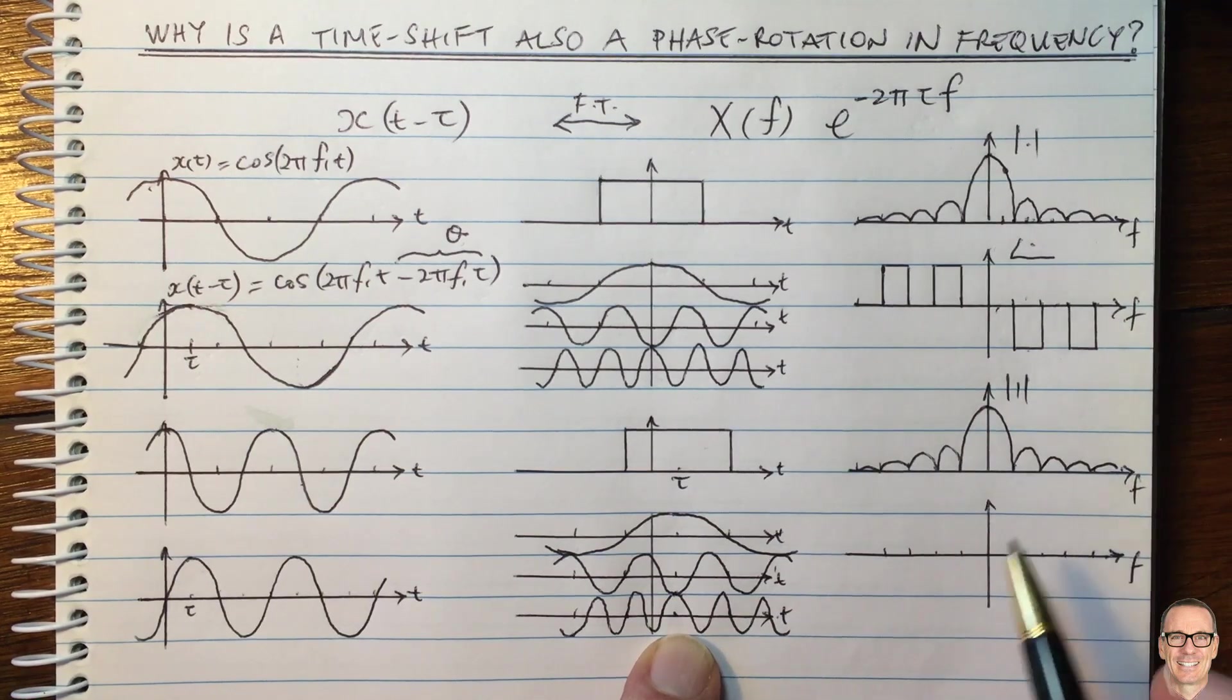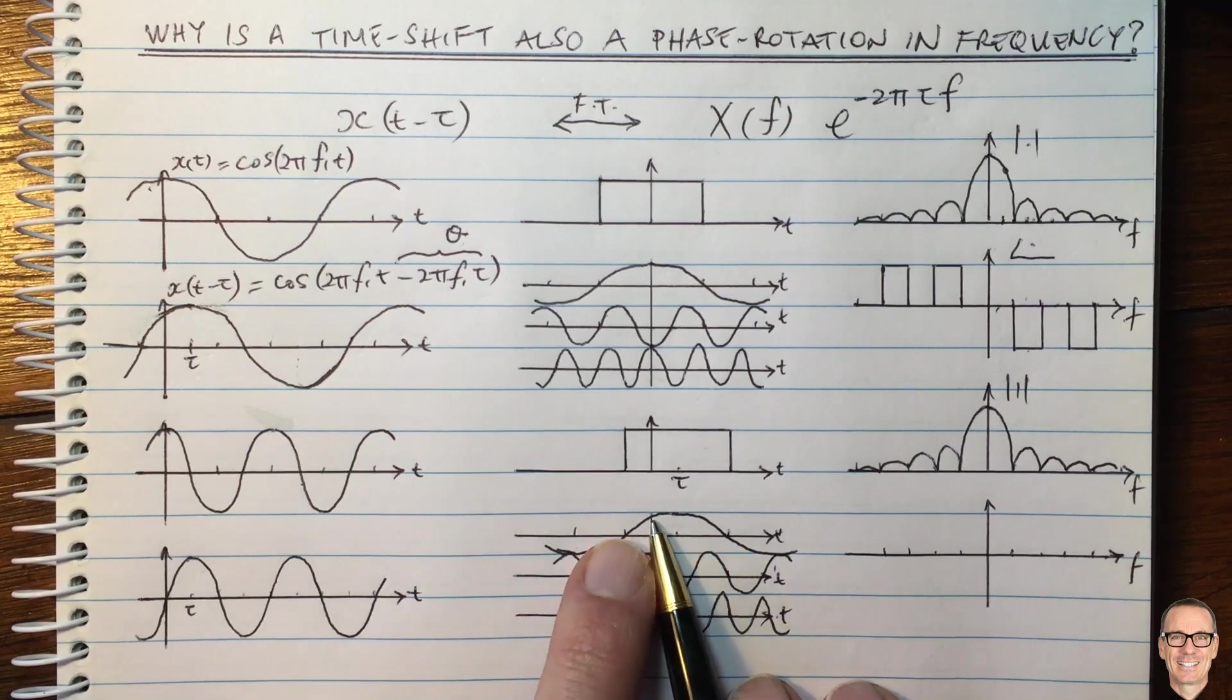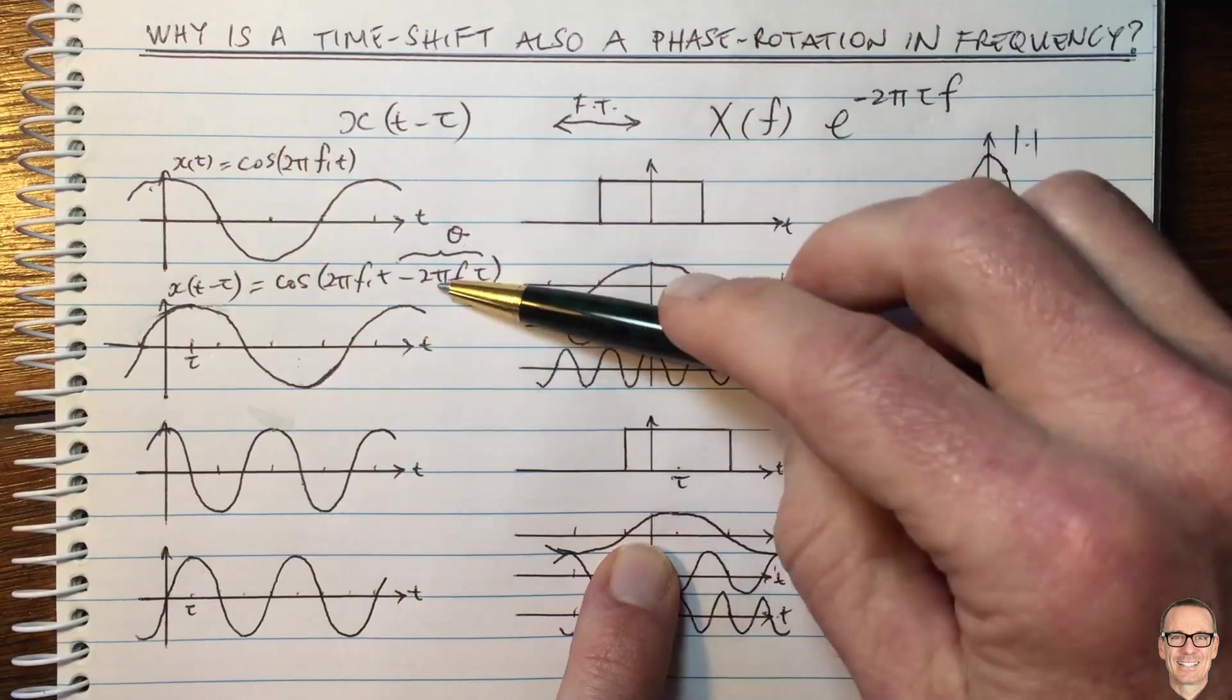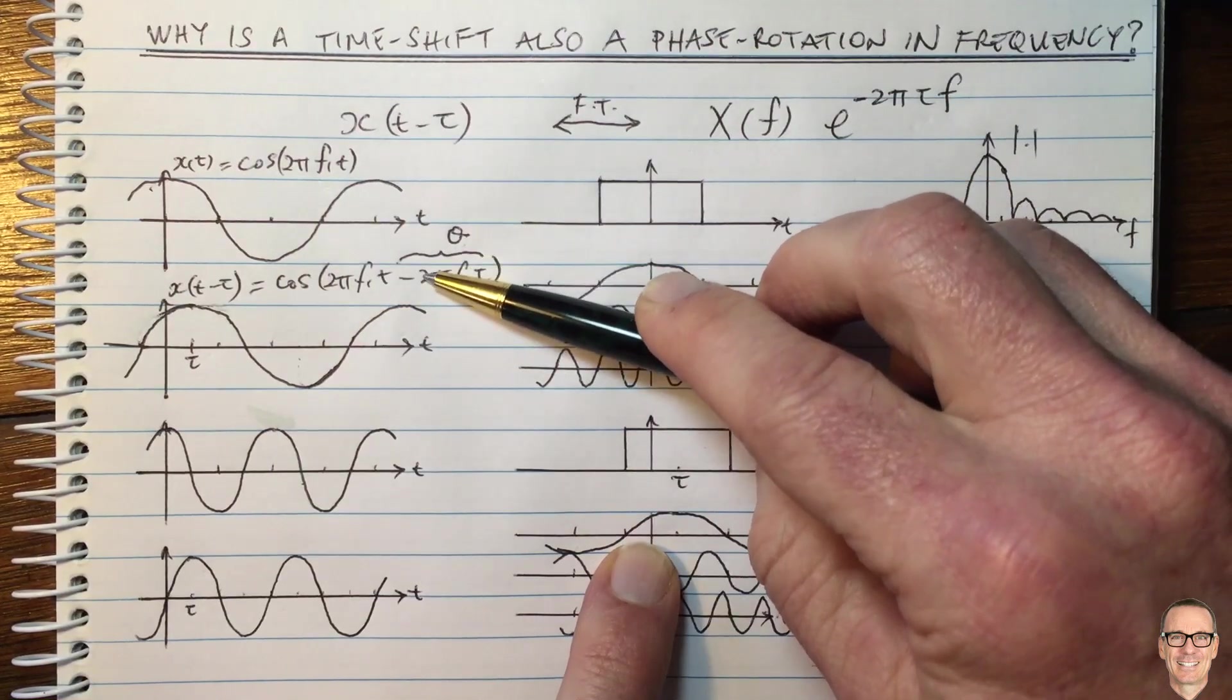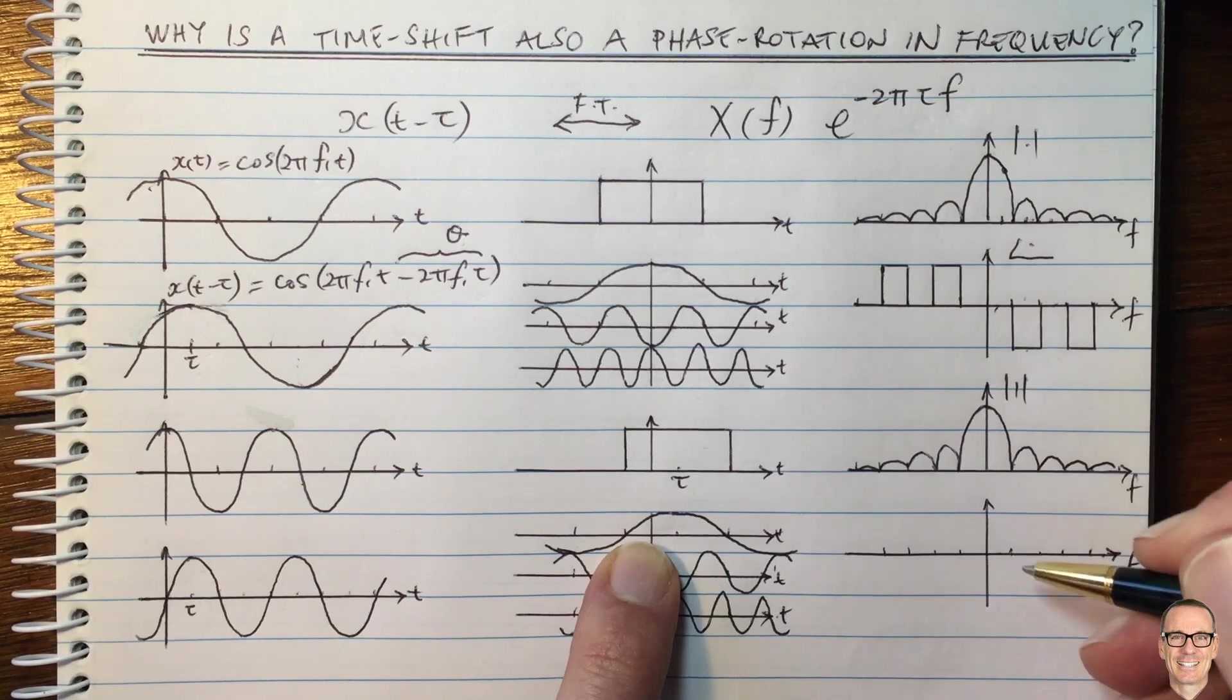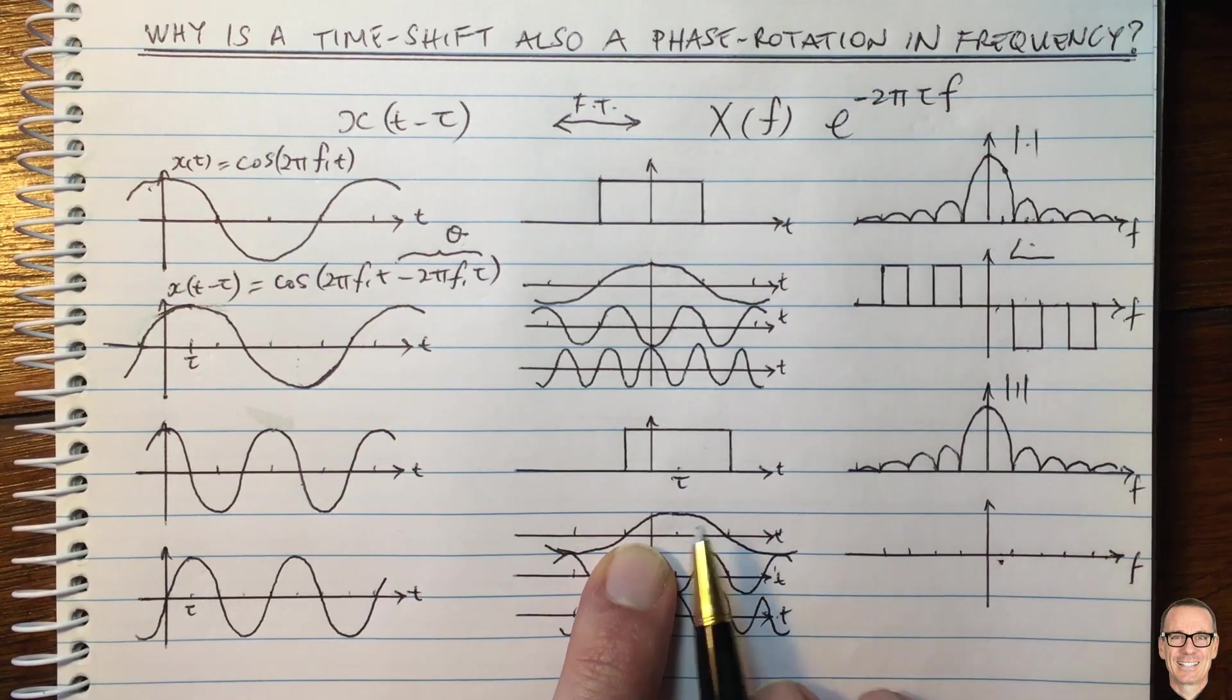So let's see what happens over in the frequency domain. Well, this is no longer a zero phase cos wave. It's a cos wave with a shift exactly like we saw up here. And so it's going to have a negative phase. So at that frequency, we are now getting a negative phase component, a small amount of negative phase.